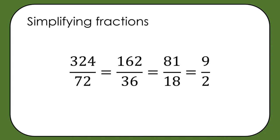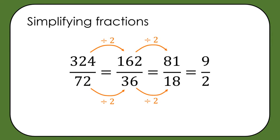If I'm faced with 324 over 72, I don't need to know the highest common factor straight away — I just need to identify any common factor. Both are even numbers, so I divide by 2 to get 162 over 36. Still both even, so I divide by 2 again to get 81 over 18. Now I can see that 81 and 18 have a common factor of 9, so dividing both by 9 gives me 9 over 2, which is in simplest form since 9 and 2 share no further common factors.